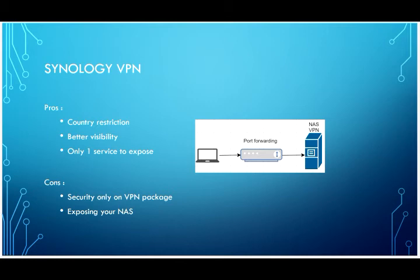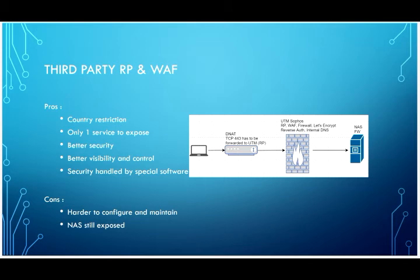For the third-party reverse proxy and web application firewall, the pros are country restriction capability, only one service to expose, way better security thanks to WAF, IPS, and antivirus, better visibility to see who is connecting and what requests they're making, and better control to block specific IPs or requests. Security is handled by dedicated security software. The cons are that it's harder to configure and maintain, and the NAS is still exposed — but much better than a direct connection.